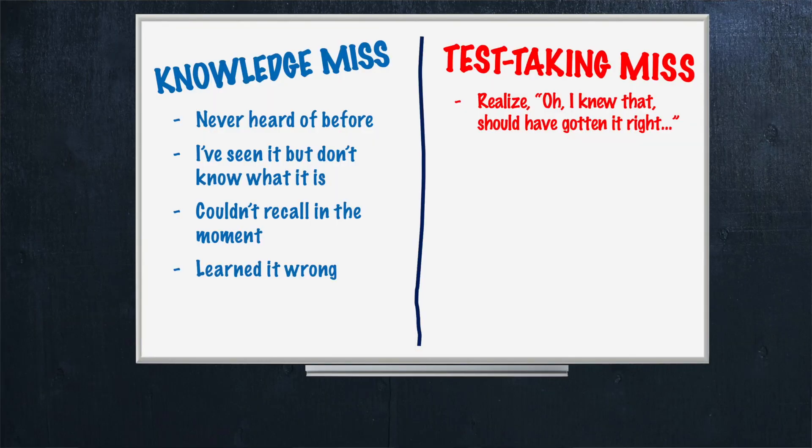A bad test taker is probably doing the same handful of patterns over and over again. We've identified about a dozen of these patterns, give or take, and we want to help people find them for themselves. One of those patterns, broadly speaking, would be that you realize you latched on to one single clue while ignoring other clues. This type of move is one way to validate a wrong answer choice in the heat of the moment and actually use your knowledge against yourself — a really damaging maneuver.